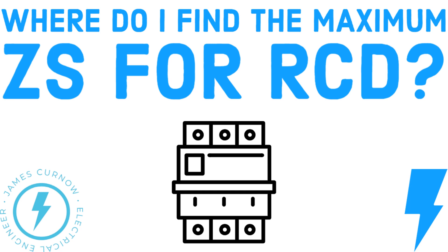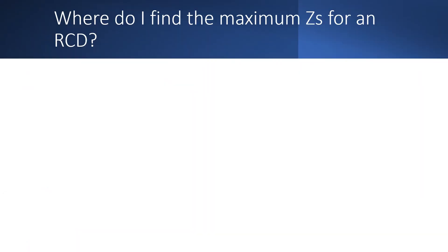Hi everyone and welcome to my channel. The question in this video is: where do I find the maximum ZS when using an RCD? So if you're working on an installation where you need to rely on the 30 milliamp RCD protection to comply with the disconnection time, such as in a TT system, what value should you enter in the column for the maximum permitted ZS?